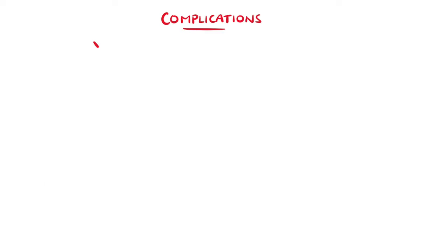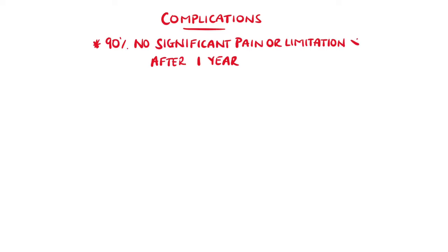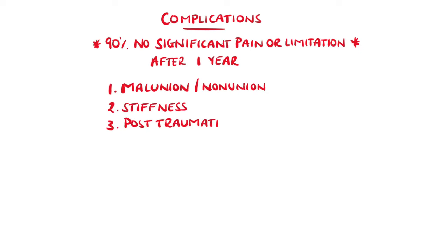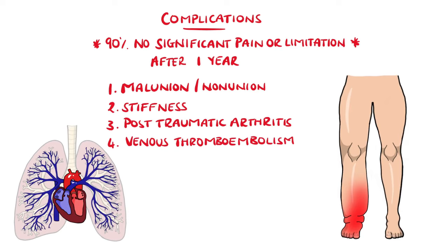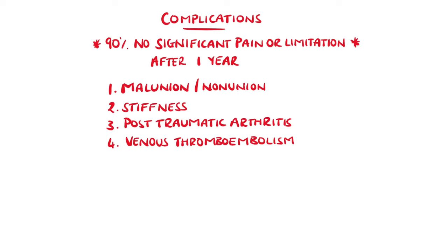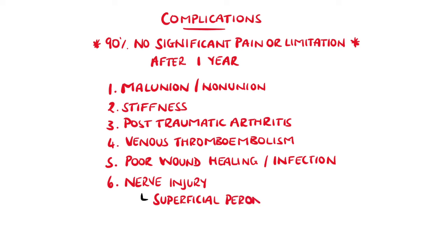In 90% of cases, most people have little to no ankle pain or limitation after one year. However, there are some potential complications like malunion or non-union, ankle stiffness or post-traumatic arthritis, venous thromboembolism such as deep vein thrombosis or pulmonary embolism, and even ulcerations from the cast. Operative complications include poor wound healing or infections, particularly in diabetic patients, and nerve injuries — the superficial peroneal nerve being injured in 15% of cases.